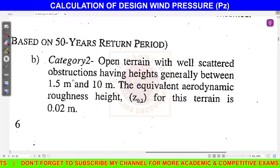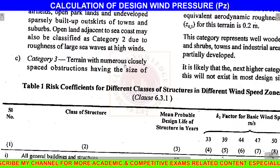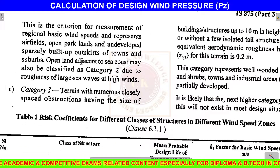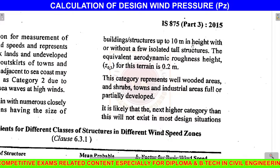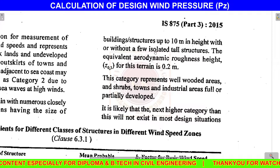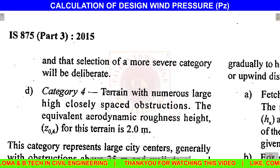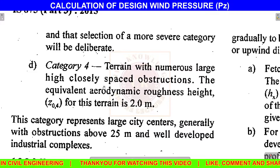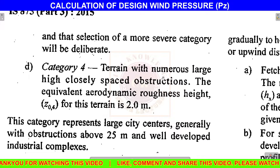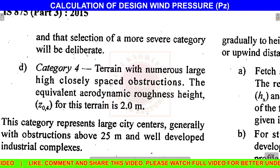Category 3 has terrain with numerous closely spaced obstructions of building structures up to 10 meters in height, with or without a few isolated tall structures. Category 4 has terrain with numerous large closely spaced obstructions with equivalent aerodynamic roughness, such as high-rise buildings.